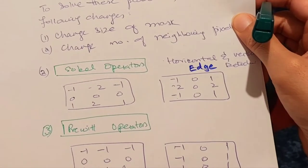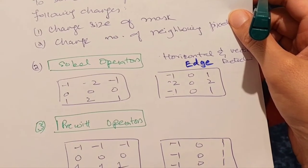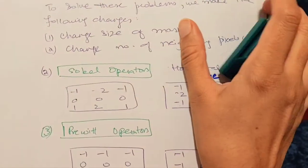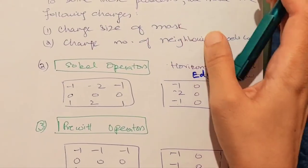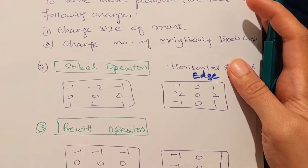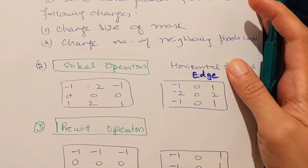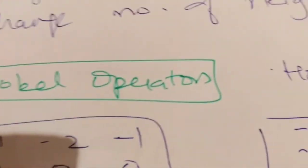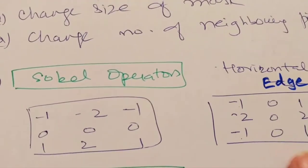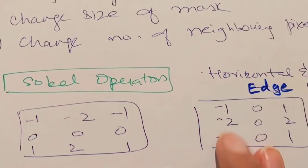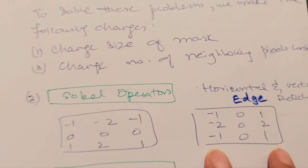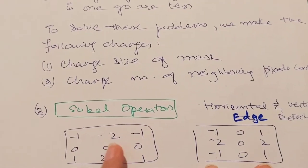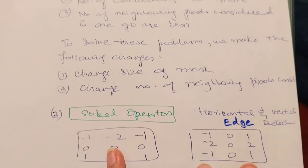The Sobel and Prewitt operators are both 3x3 size masks. In the Sobel operator, the top row is [-1, -2, -1], the middle row is all zeros, and the bottom row is [1, 2, 1]. We can also write the Sobel operator with rows replaced by columns, introducing a zero column in the middle. The first version detects horizontal edges and the second version detects vertical edges.